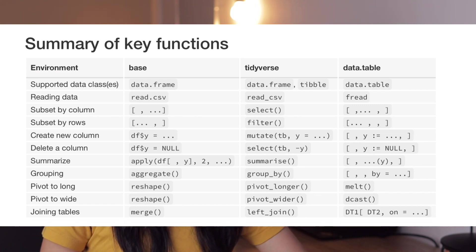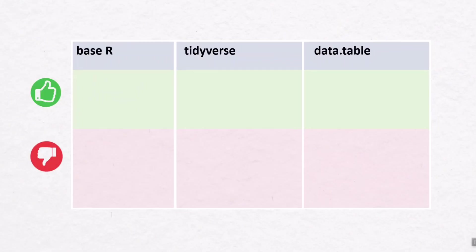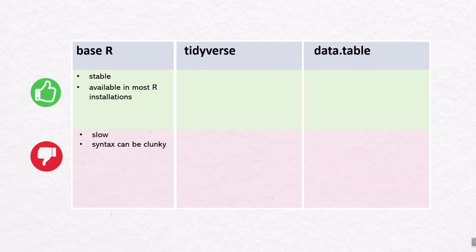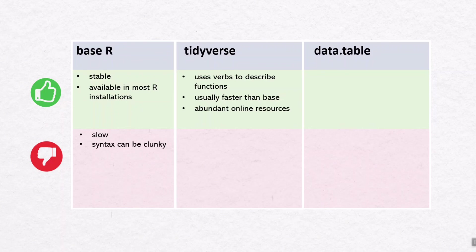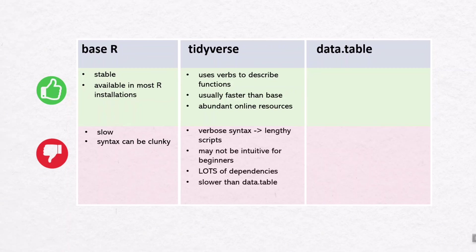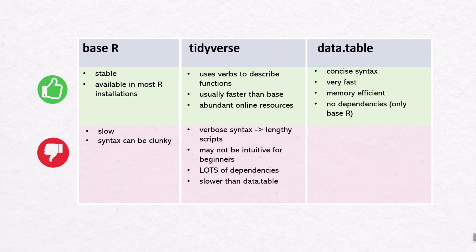Here's a summary of key functions in base R, tidyverse, and data.table. The syntax looks quite different — tidyverse is way more verbose than the other two, and data.table has its own typical syntax for data manipulation. Base R is very stable and available in most installations, but can be slow and clunky. Tidyverse uses natural verbs and is faster than base R with abundant online resources, but its verbose syntax can make for very lengthy scripts and it has a lot of dependencies.